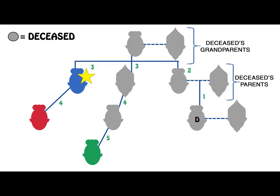Let's look at an example. D dies intestate and is only survived by a second cousin, a cousin and an aunt. It is therefore necessary to calculate who is closest in blood to the deceased. If we look at parentela, there is no one surviving in the first or second parentela. However, in the third parentela, we have an aunt who is surviving. When we look at the degrees of consanguinity, the second cousin is related to the deceased in five degrees; the cousin is related to the deceased in four degrees; and the aunt is related to the deceased in three degrees. Therefore, the aunt is his closest relation and will therefore inherit the whole estate.